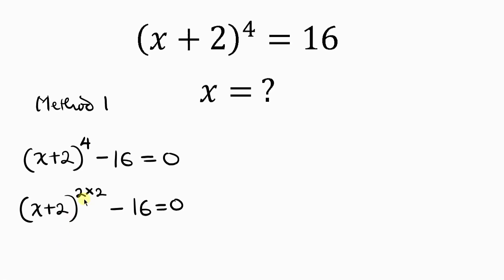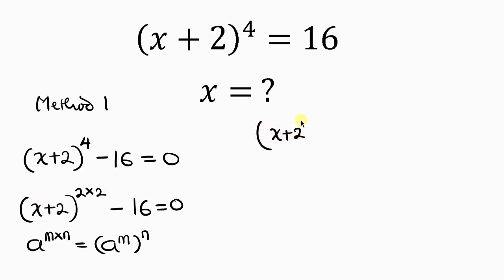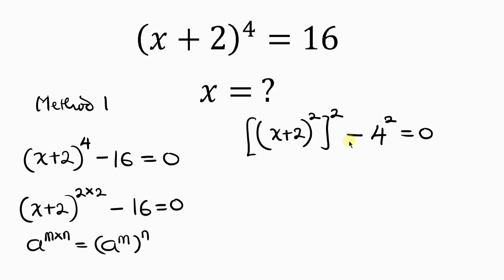Our next step is to apply indices. The rule says a^(m×n) = (a^m)^n, so this expression can be written as (x + 2)^2 all raised to the power of 2. Since 16 is a perfect square, it can be written as 4 squared. So we have (x + 2)^2 squared minus 4 squared equals zero.